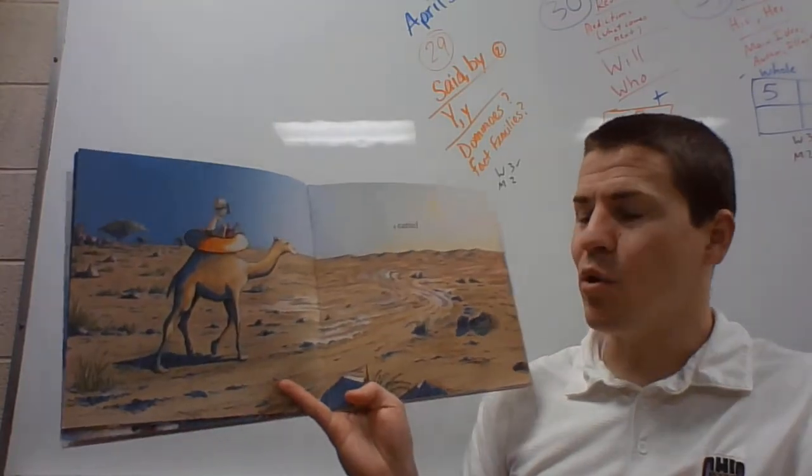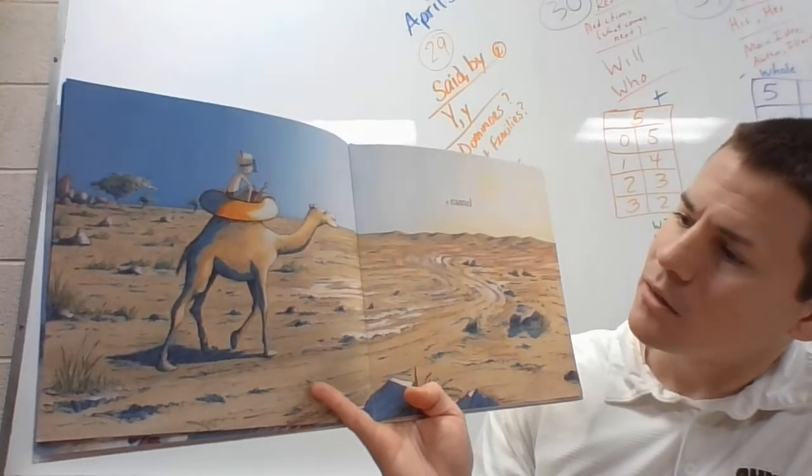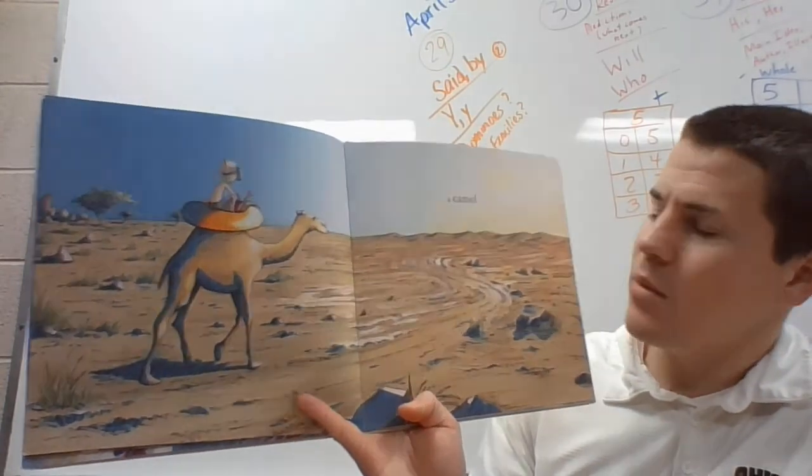A camel. Oh, my goodness. He's not at the beach now. Where is he? Yep, the desert. Maybe Egypt.